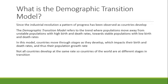Since the Industrial Revolution, a pattern of progress has been observed as countries develop, and the demographic transition model tries to describe this trend. The model refers to the trend where populations move away from unstable populations with high birth and death rates towards stable populations with low birth and death rates. Countries move through stages as they develop, and their birth and death rates are impacted, thus changing their population growth rates.